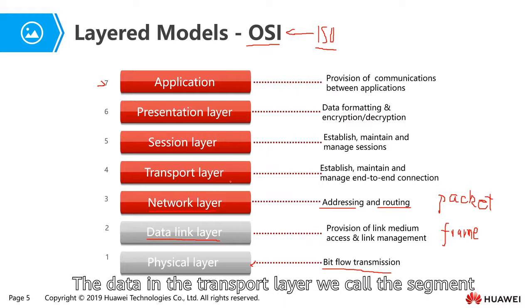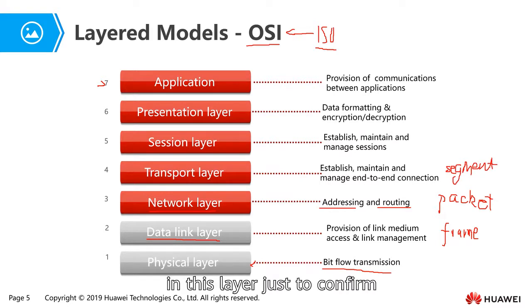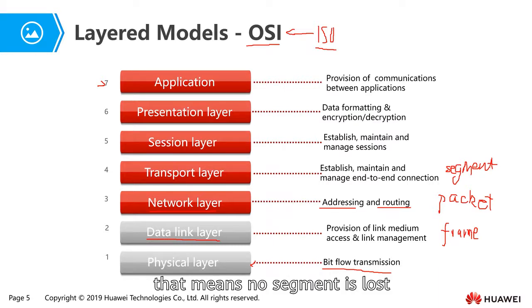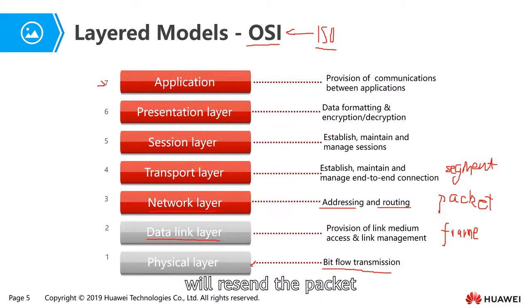The transport layer: the data sent in the transport layer is called a segment. This layer confirms that the transmission of data is reliable — that means no packet is lost. If there is a packet dropped between the two communicating devices, then the transport layer will repair it and resend the packet.